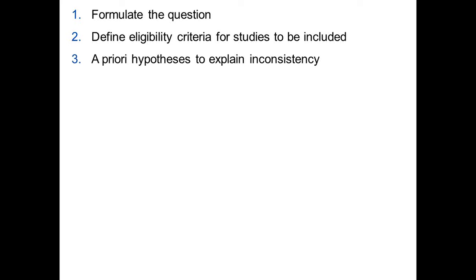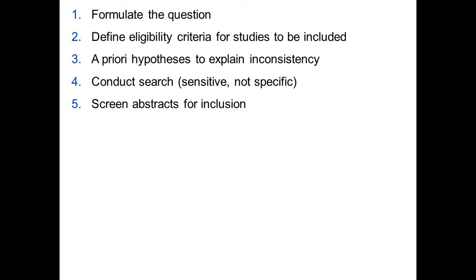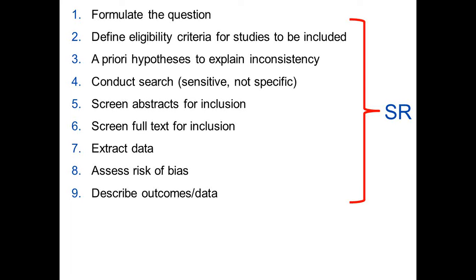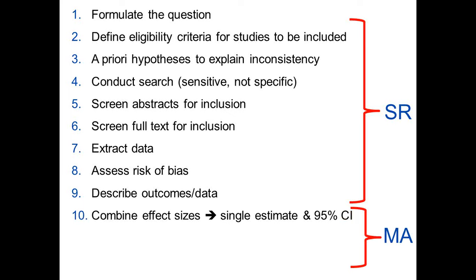We went through the steps of a systematic review: formulating the question, defining eligibility criteria in a protocol, defining a priori hypotheses to explain inconsistency between studies, the search, screening abstracts and full text, data extraction, and assessing the risk of bias. Up to this point, this is a narrative process called a systematic review. If we proceed to a meta-analysis, we combine effect sizes using a statistical model. We then try to explain causes of heterogeneity and rate our confidence or certainty in the estimates, which is the most important final step.